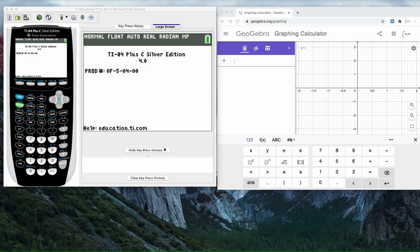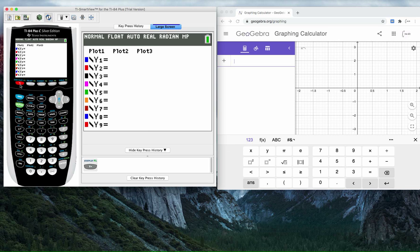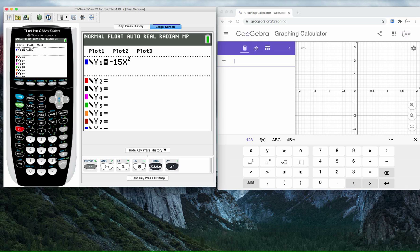Now we're going to use technology to recreate the graph on the previous page. I have both GeoGebra and a graphing calculator up. Let's start by using the graphing calculator and clicking on y equals. Then we're going to type in, first with this little negative button, negative 15, then x squared, plus 110x, plus 1200.